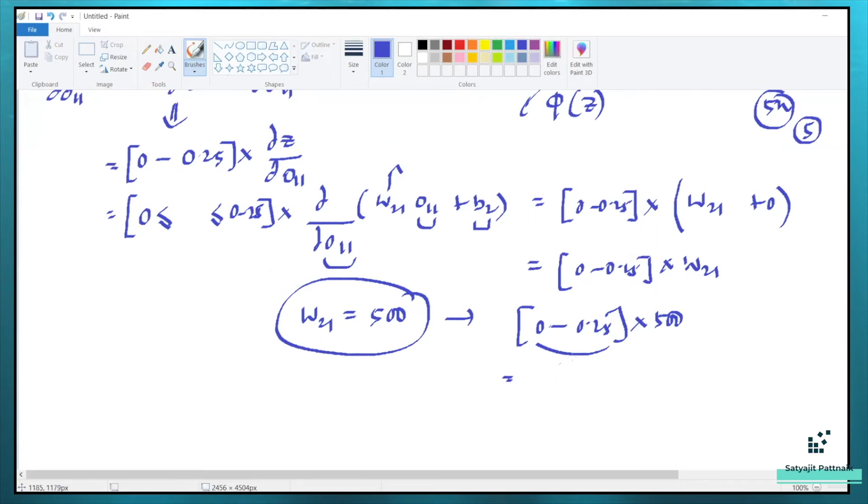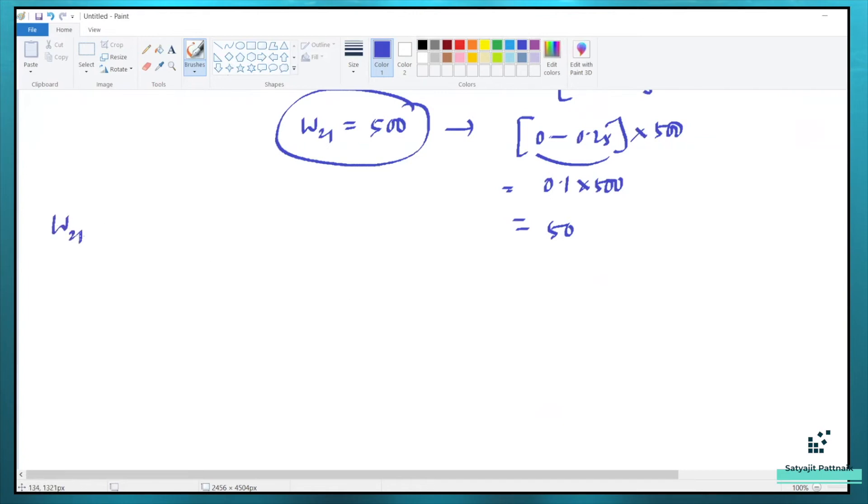Now, let's not consider the best possible value. Let's consider some intermediate value, let's say 0.1. Now, 0.1 multiplied with 500, so what is the value? 50. That means W21 dash, the new weight of W21, the old weight is 500 and the new weight is 50. You can see the difference between the old weight and the new weight varies a lot. It's almost a reduction of 90%. So from 500 to 50, the weights are drastically changing. Whenever this situation happens, new weight and old weight varies a lot between two consecutive iterations. This scenario is called exploding gradient problem.